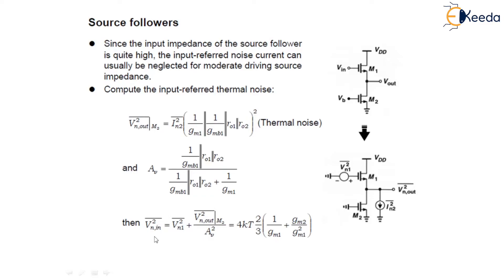Now we can find out the input referred noise voltage as Vn² = Vn1² + Vn²_out(M2) / gain², which equals 4KTγ · (1/gm1 + (gm2/gm1)²).